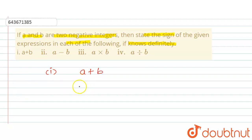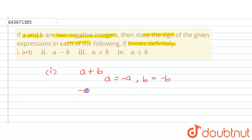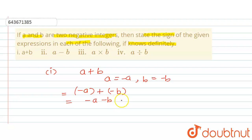We will check each part one by one. For the first part, a plus b: since a and b are two negative integers, a equals minus a and b equals minus b. So we put the negative signs, giving us minus a plus minus b, which equals minus a minus b. The resultant number has a negative sign, so the sign will be negative.